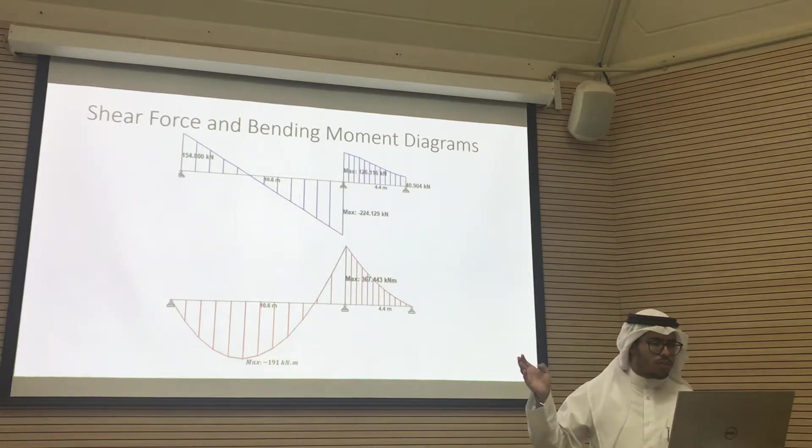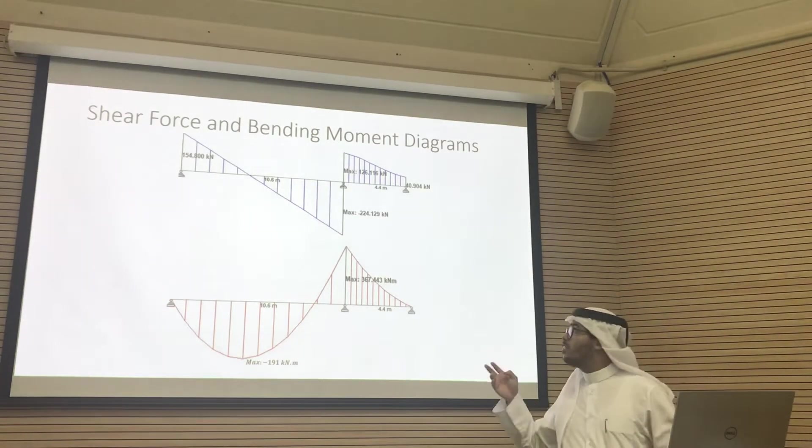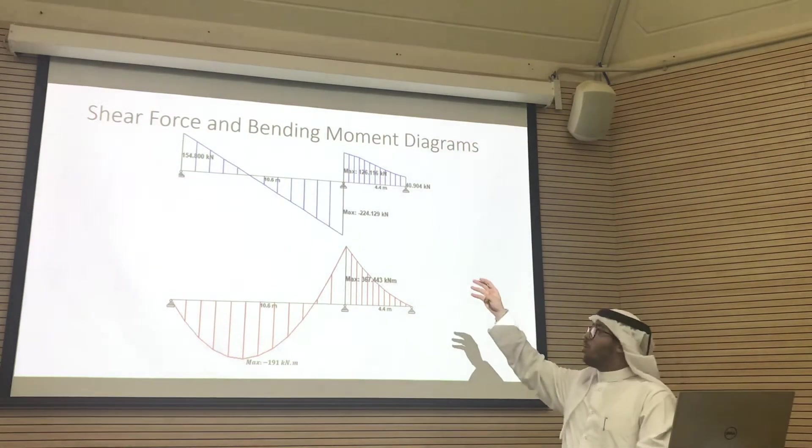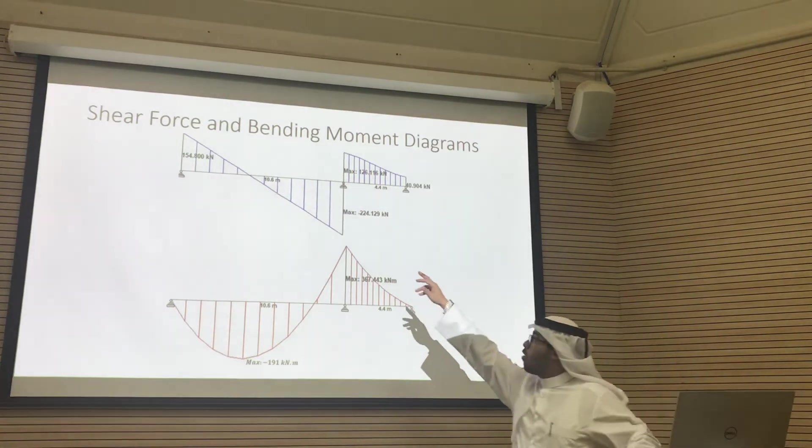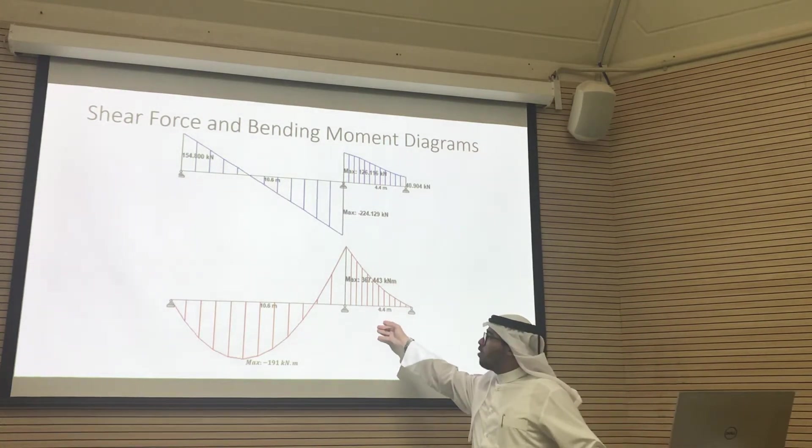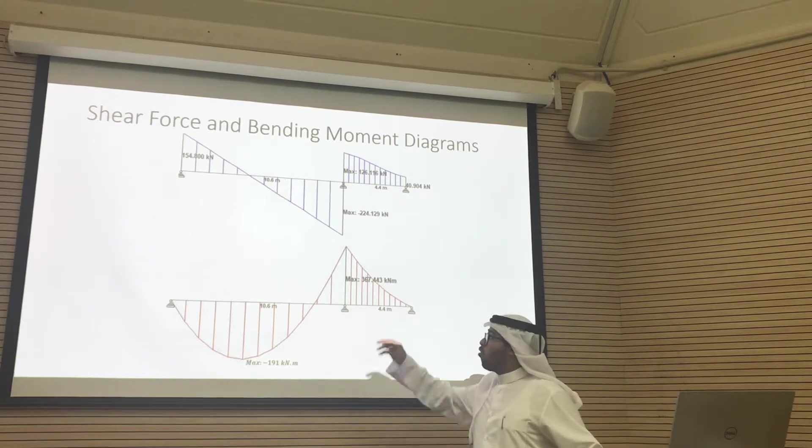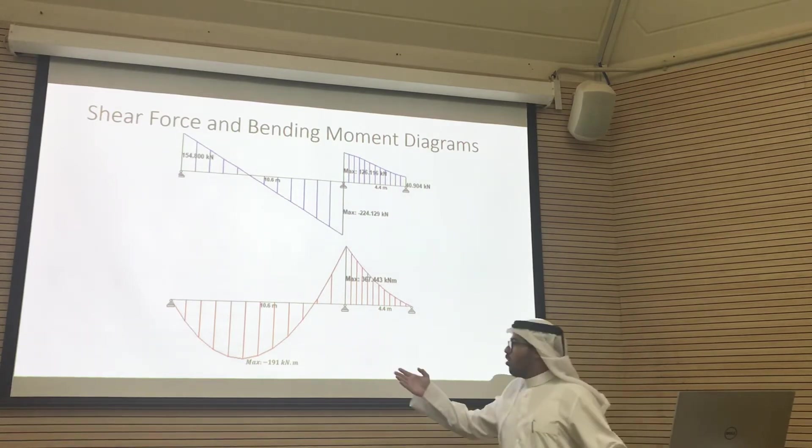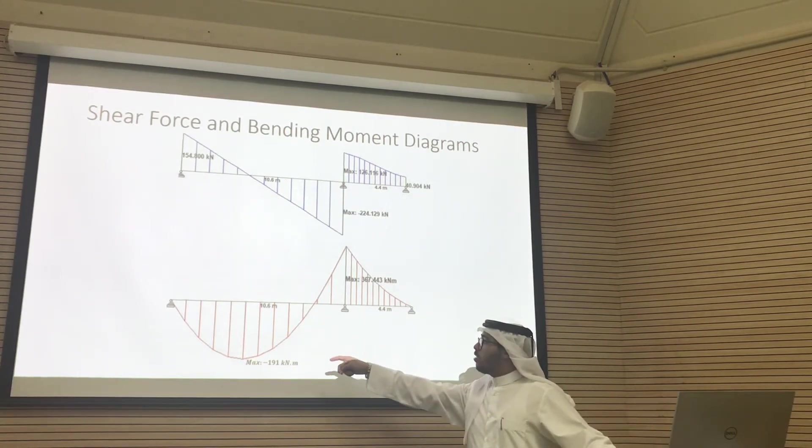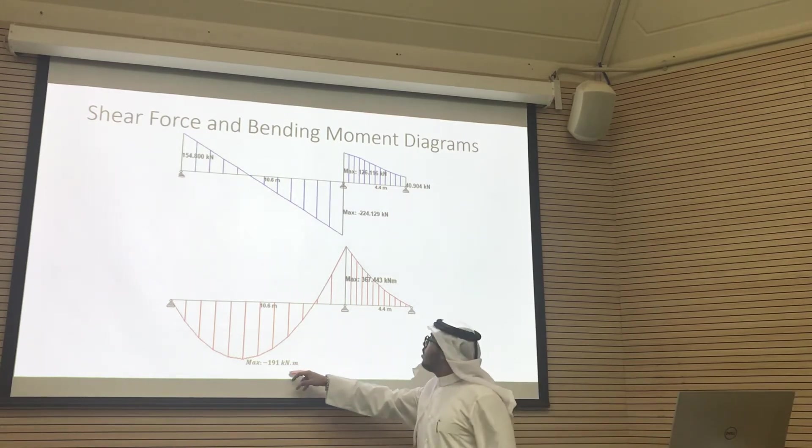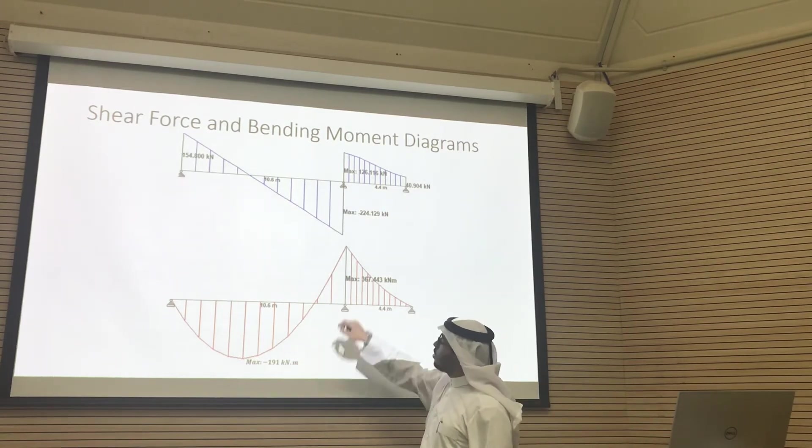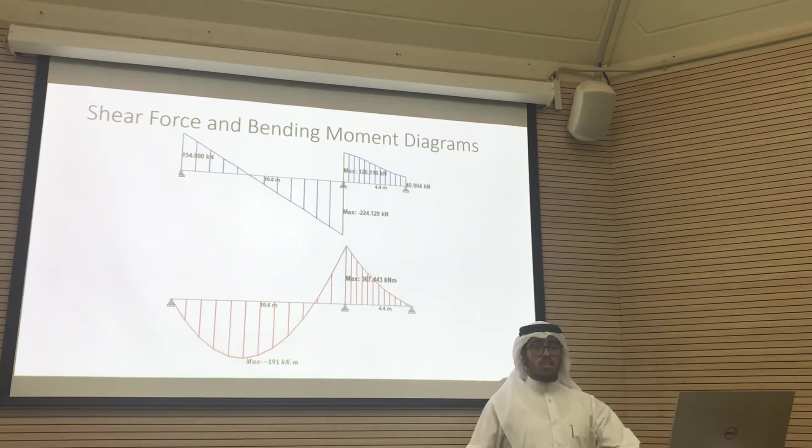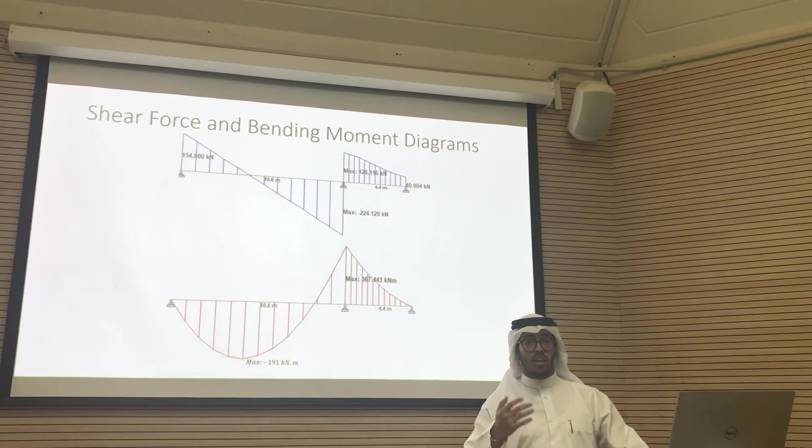After that, we will move to the shear force and bending moment diagram. This is an example for shear moment at the top of Beam 1 and bending moment for Beam 1. As we see here, the bending moment gives us maximum at 367.44. This is what I have on my part. Thank you so much.